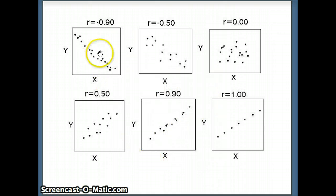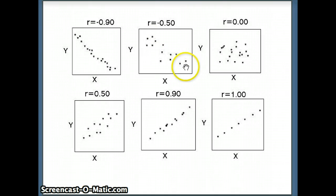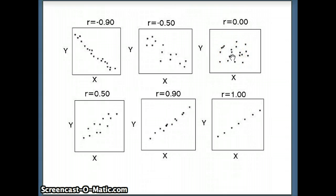Here are some other examples. An r of negative 0.9: notice the general trend going down, the points almost lie on a straight line, hence the correlation coefficient is about negative 0.9. Here the correlation is about negative 0.5 — we use the letter r for the correlation coefficient — the points tend negative but are not as tightly bunched. Here the correlation is zero: it's a cloud with no way to predict the y value from the x value.